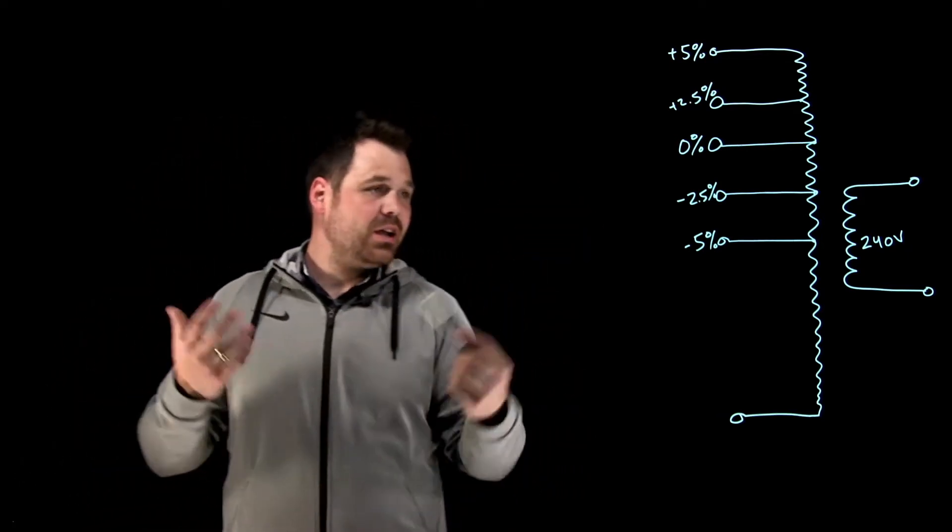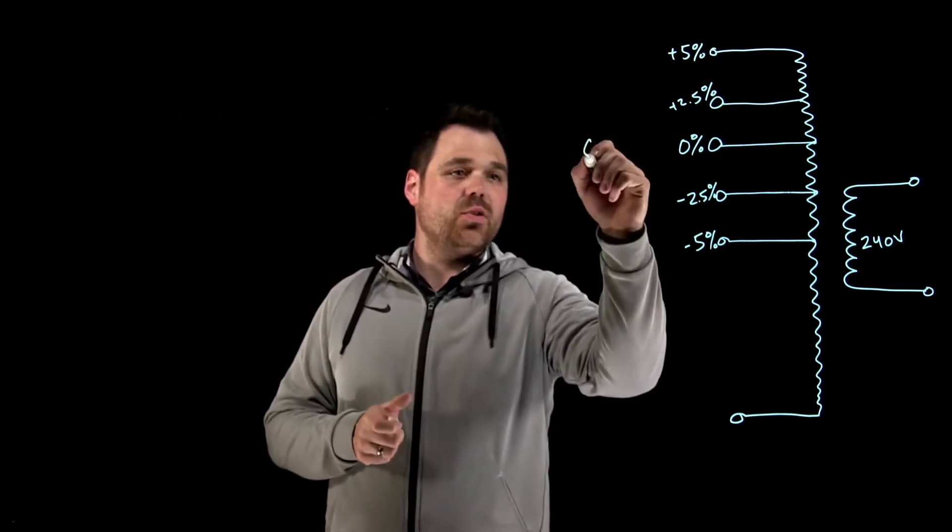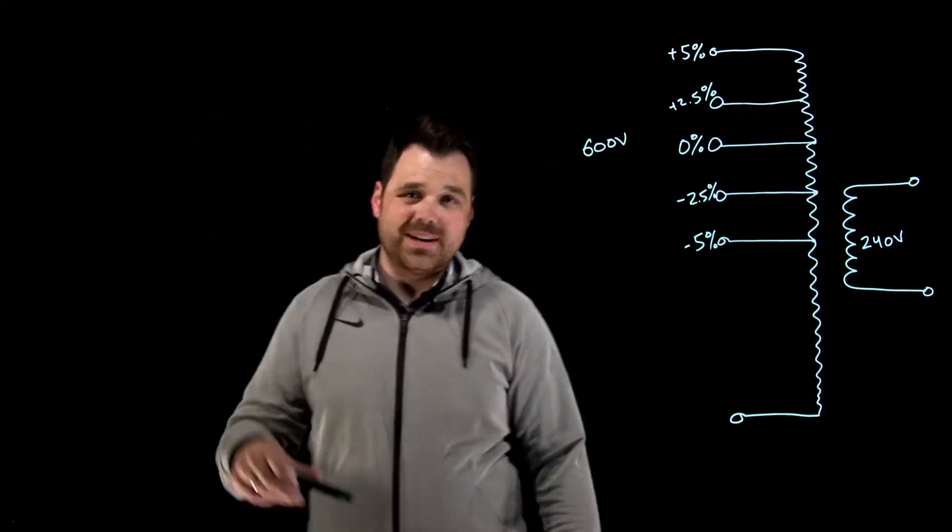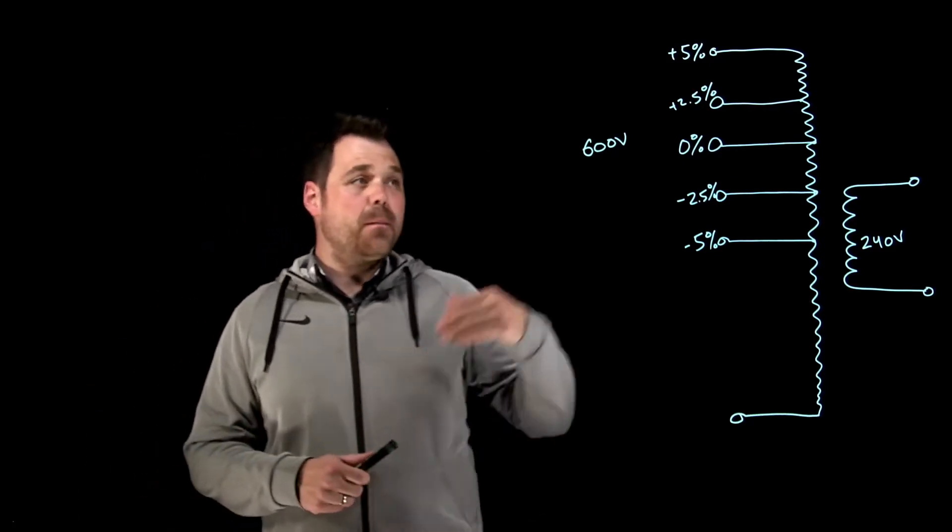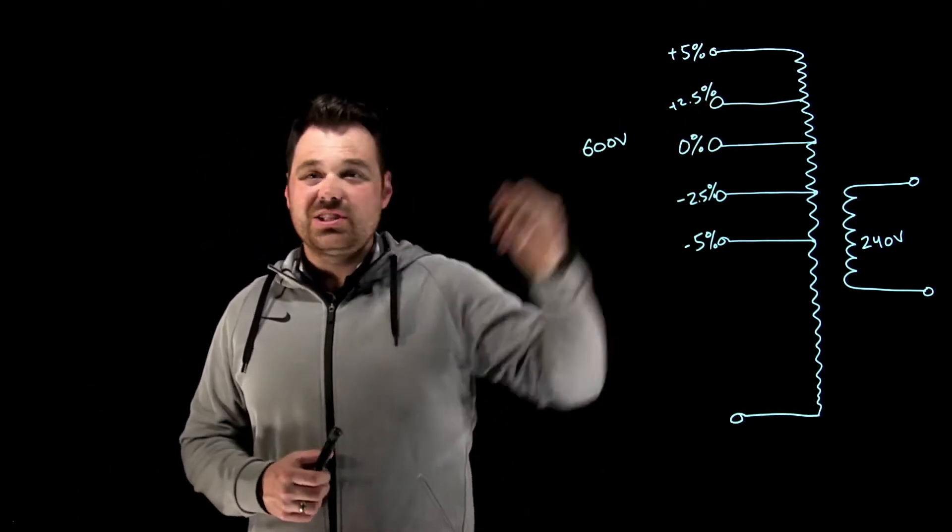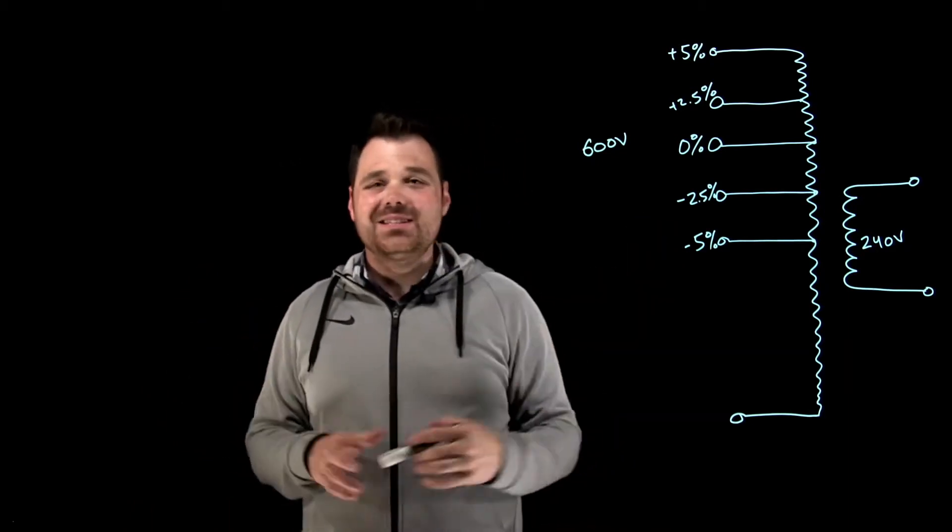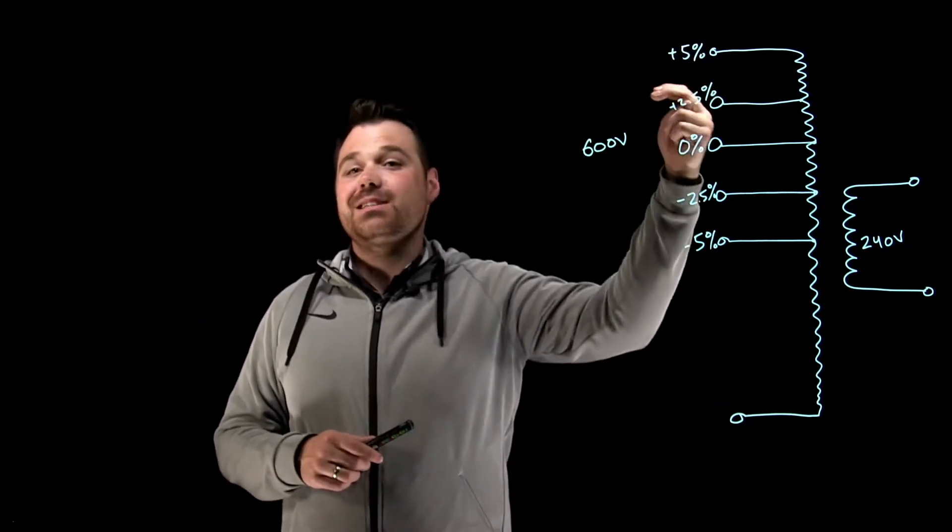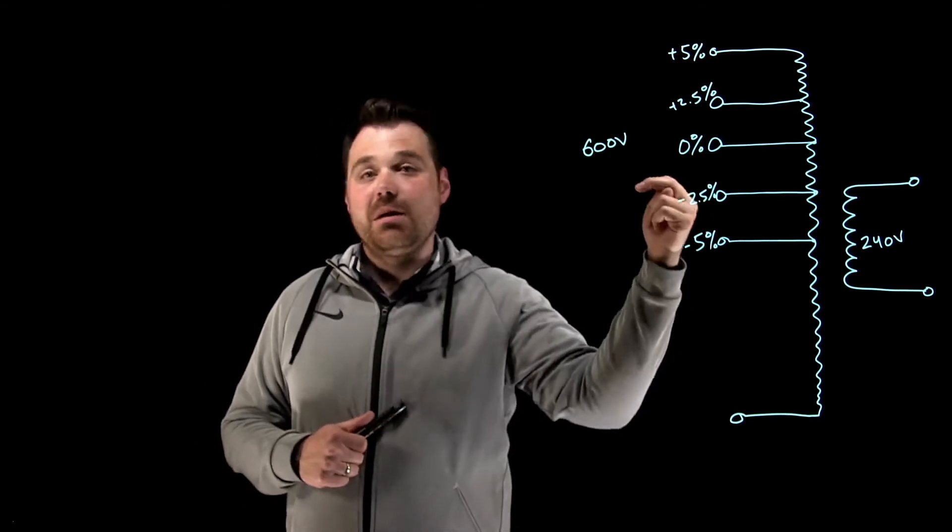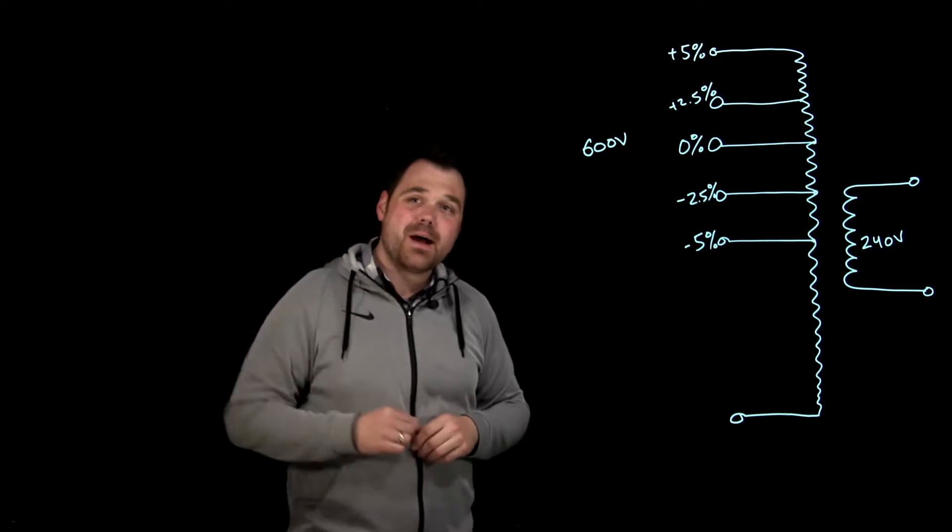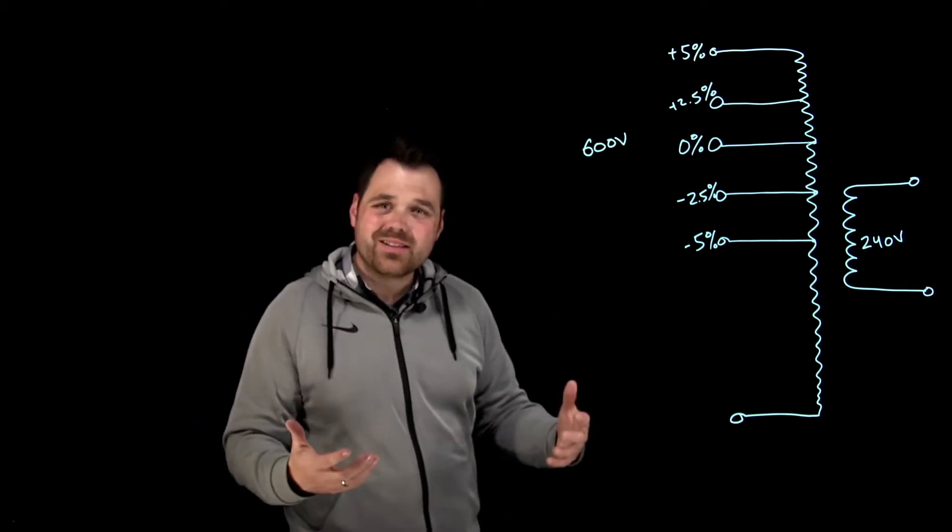Here I've got a 600 volt rated down to 240 volt transformer. Now what we see here on the primary is we see these little taps with labels, sometimes they're three, sometimes they're five, whatever they are. In this case, I've got a plus 5%, plus two and a half percent, minus two and a half percent and a minus 5%. Now these are voltage taps. What's the purpose? Why are they there?